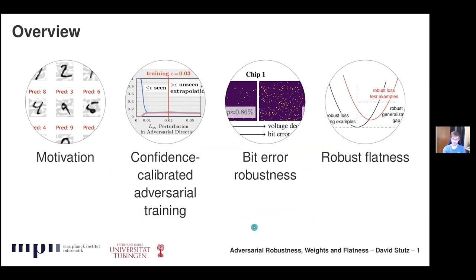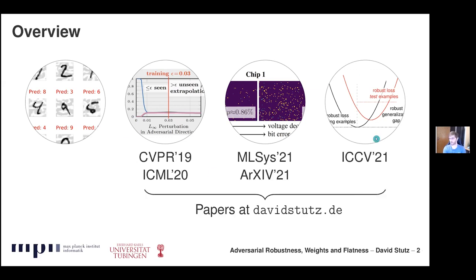This is a short outline of the talk. I'll start with a brief high-level motivation and background on adversarial robustness and adversarial examples. Then I'll have three bigger parts: first, defending against adversarial examples with confidence calibrated adversarial training; second, robustness in the weight space against bit errors in quantized models; and finally, combining both to argue why considering robustness in both input space and weight space can be beneficial — my latest work from ICCV two weeks ago. Papers are available on my webpage.